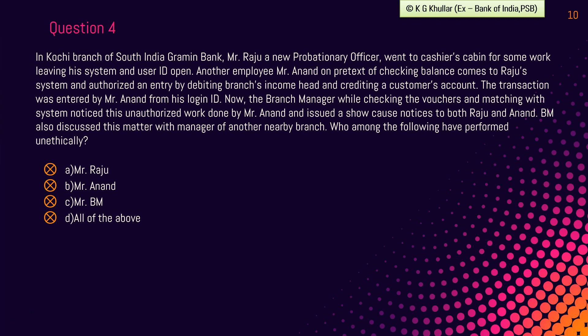Mr. Anand obviously worked unethically by working on Mr. Raju's system with malign intentions. Lastly, Mr. BM also worked unethically. He did the right job by issuing show cause notices, but when this kind of unethical issue happens in any branch, the BM must act as a whistleblower and report the matter to the immediate higher authority — that is, regional, zonal, or controlling offices. Thus all three members performed unethically. The correct option is option D.